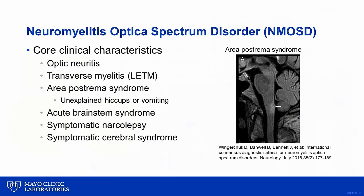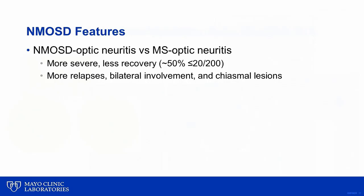NMOSD also includes acute brainstem syndrome, symptomatic narcolepsy from diencephalon lesions, and symptomatic cerebral syndrome. This entity is important to diagnose because the prognosis and treatment is much different than MS. The attacks are severe and tend to have poor recovery. Optic neuritis will lead to legal blindness of 20/200 or worse in one eye in about 50% of patients affected by optic neuritis from NMO.